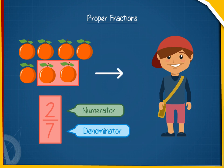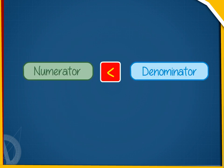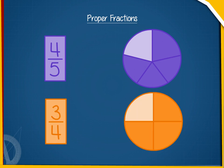A proper fraction is a fraction where the numerator is less than the denominator. For example, the fractions 4 by 5 or 3 by 4 are proper fractions.